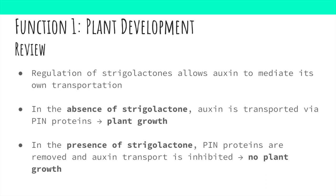In stressful environments, auxin will trigger the synthesis of strigolactones to inhibit plant growth. Although strigolactones play a crucial role in plant development, it is auxin that starts the initial chain of reactions to mediate plant development.